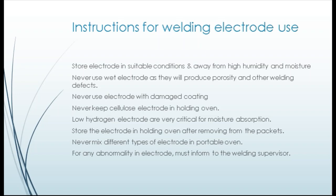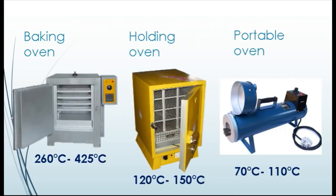6. Store electrodes in the holding oven after removing from packets. 7. Never mix different types of electrodes in the portable oven. 8. For any abnormality in an electrode, inform the welding supervisor. Some electrodes after opening must be properly baked and kept in the holding oven to keep them free from moisture. Low hydrogen, rutile, and basic type coating electrodes should be baked and kept in the holding oven. Cellulose types are an exception and must never be baked. Portable ovens are used to keep electrodes warm at the welding site.